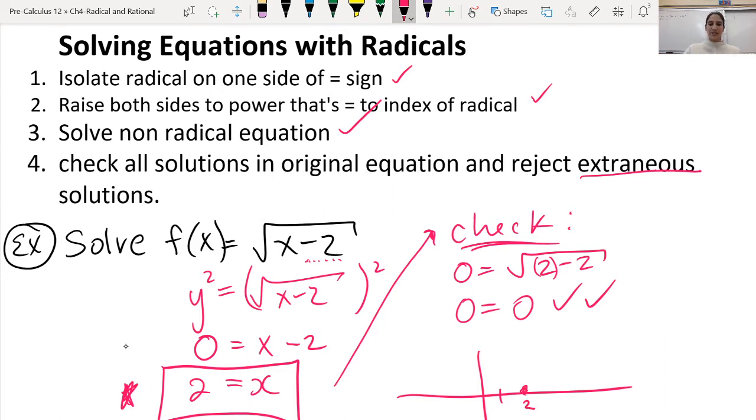So our starting point, instead of it being at 0, it's actually slid over two points and starts here. So the solution is always the point where y equals 0, so we know that that's our solution.